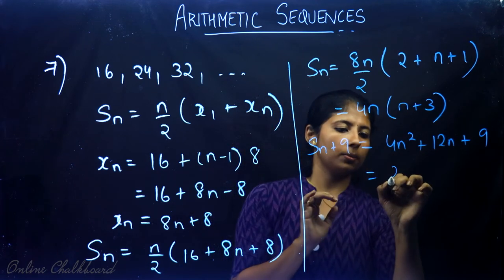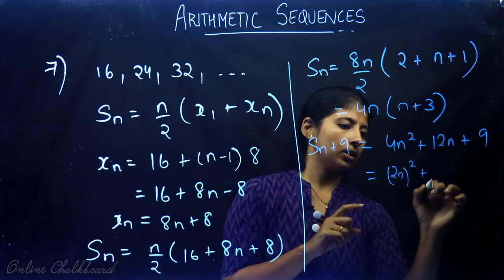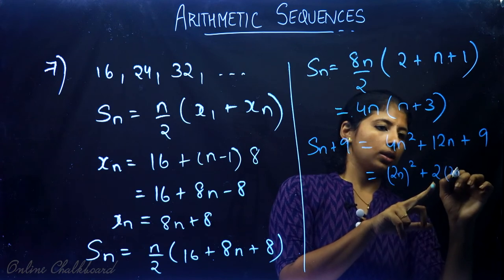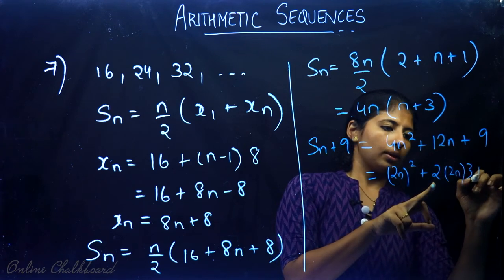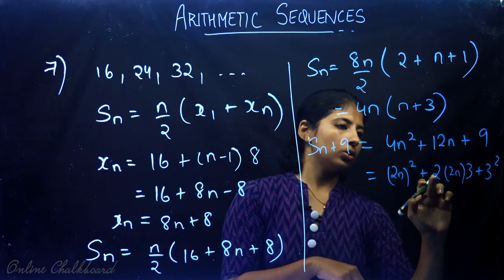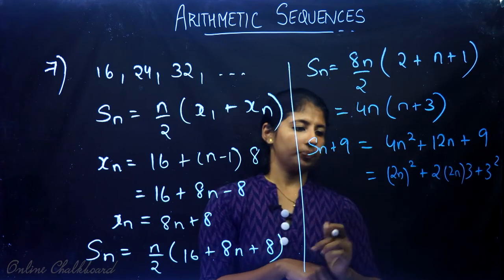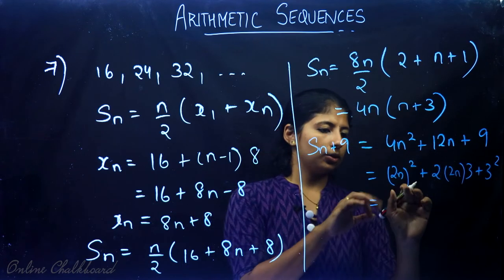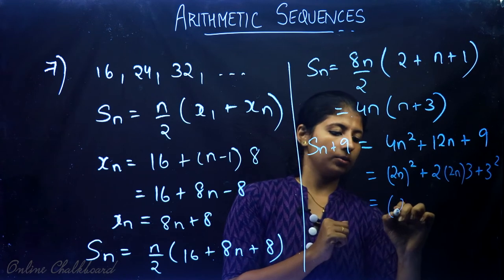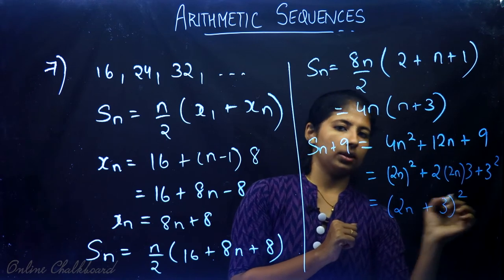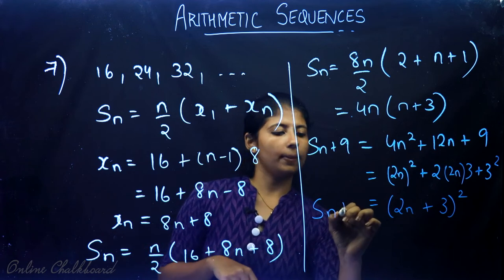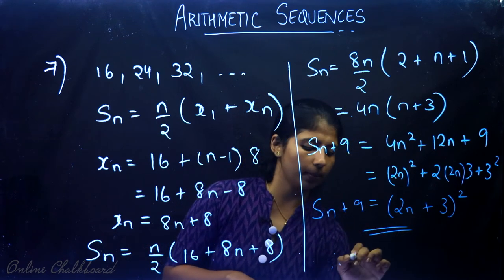We can verify: 4n² plus 12n plus 9 equals (2n)² plus 2 times 2n times 3 plus 3², which is (2n plus 3)². This matches the identity (a plus b)² = a² plus 2ab plus b². Therefore, Sn plus 9 is always a perfect square.